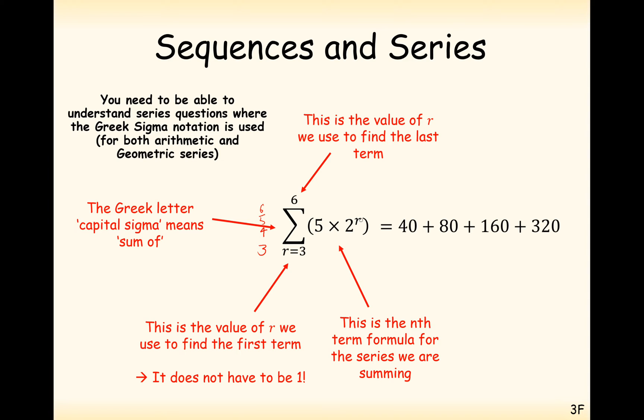So in this case here, if you substitute 3 into this formula here, you get 5 times 2 to the 3, which is 40. So this is the r equals 3 term. This is the r equals 4 term. This is the r equals 5 term. And this is the r equals 6 term. You add up this total and you get 40 plus 80 plus 160 plus 320 and you get 600. And your answer to this question here is equal to 600.